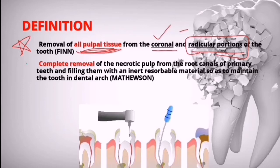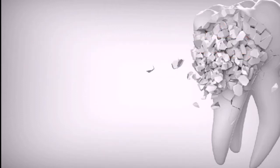In pulpectomy, the entire pulpal tissue — that is coronal plus radicular — is removed. This definition is given by Finn. Another definition given by Matthewson is: it is the complete removal of the necrotic pulp from the root canals of primary teeth and filling them with an inert resorbable material so as to maintain the tooth in the dental arch.